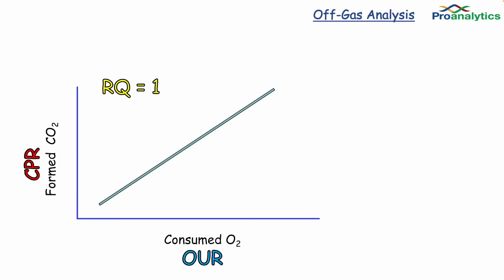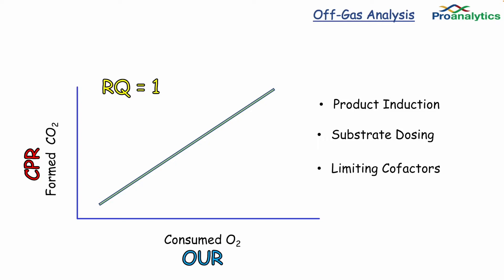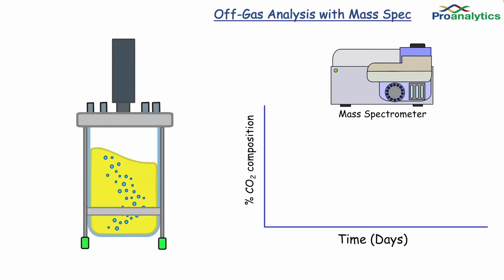Having real-time data gives scientists the time to control their cultures for things like determination of critical biomass for product induction, accurate substrate dosing, addition of limiting cofactors to control production, and much more. Off-gas is extremely valuable in making your process robust and reproducible.